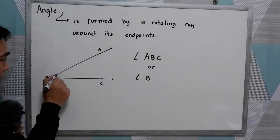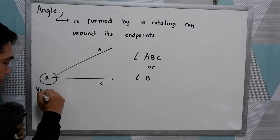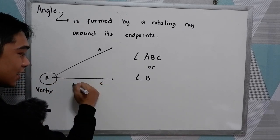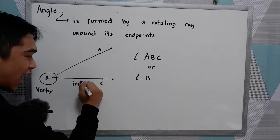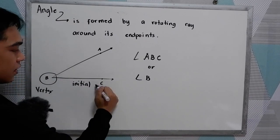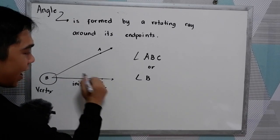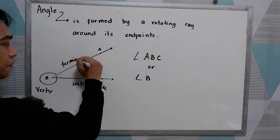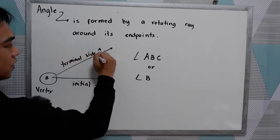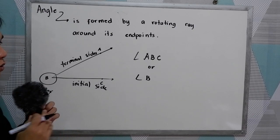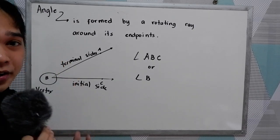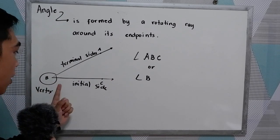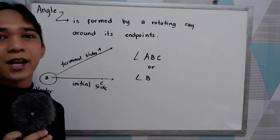So we have here the vertex. This is what we call the initial side. And this one is the terminal side. So that's the angle and its parts: we have the initial side, the terminal side, and the vertex — and how to name the angle.